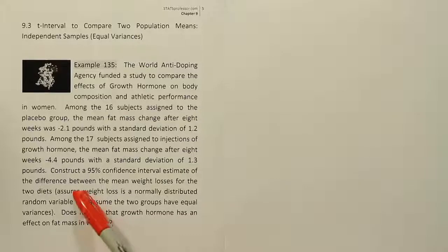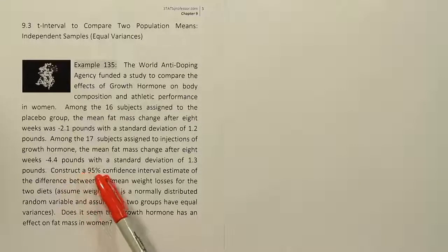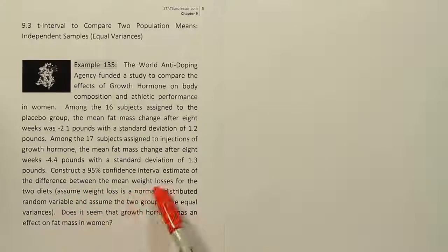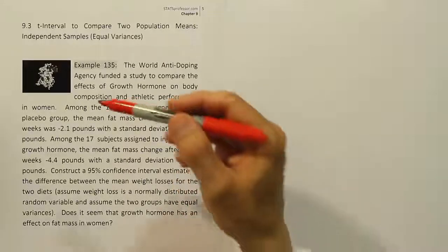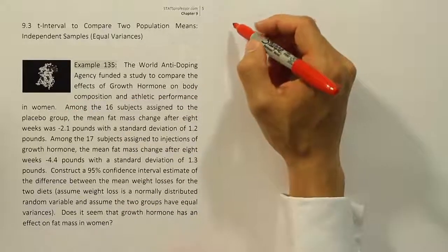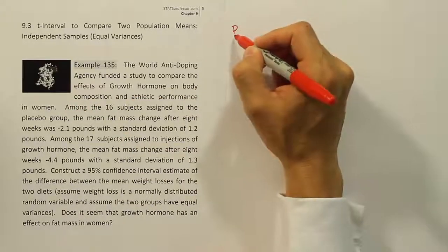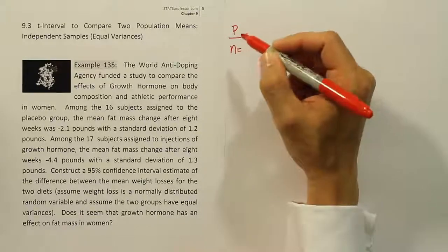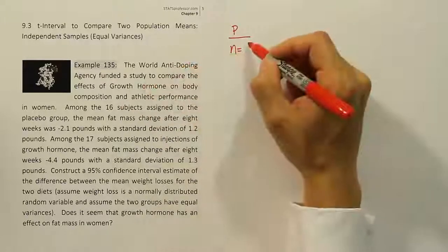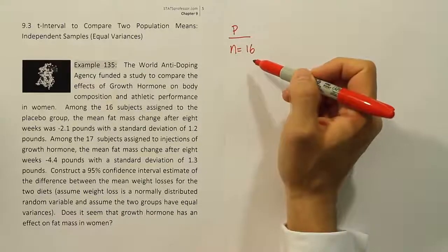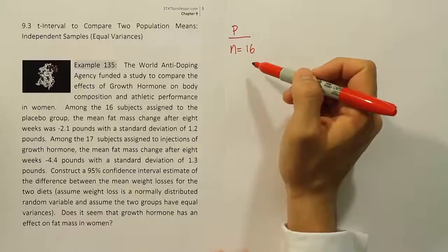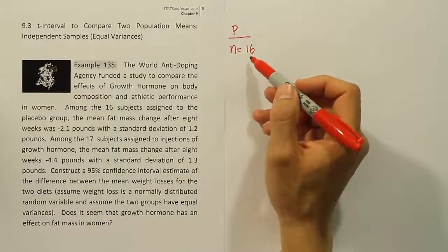Okay, so it's a confidence interval because of this phrase. Construct a 95% confidence interval and we're doing it for the difference between the mean weight losses for the two diets. So let's start by writing out the data for the problem. I'm going to start with the data they gave us first here, the placebo group. The placebo group is going to have a sample size of 16. So it's a small sample size. As soon as one of the groups has a small sample size, we're going to have to use the t procedure to construct the interval.